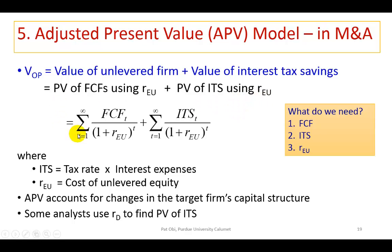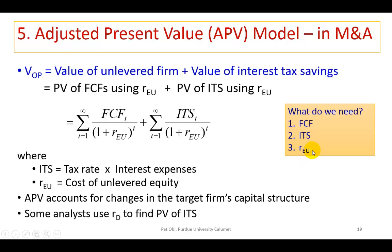The value of the firm's operations — the intrinsic value of the firm — would be the sum of the present value of the free cash flows and the present value of the interest tax savings. To find the intrinsic value of the firm, we need these three ingredients: projected free cash flows, calculated interest tax savings, and the cost of unlevered equity.